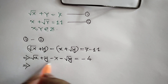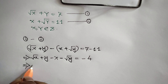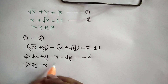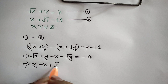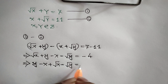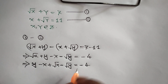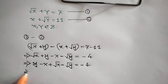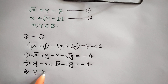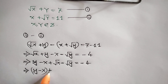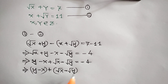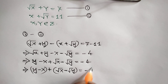Now rearranging the left side we can write: y minus x plus square root of x minus square root of y is equal to negative 4.